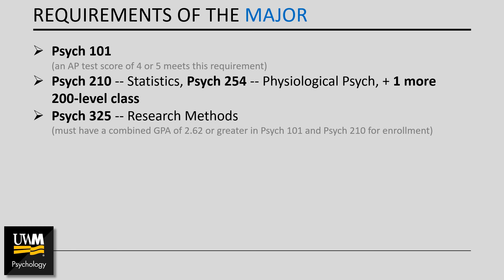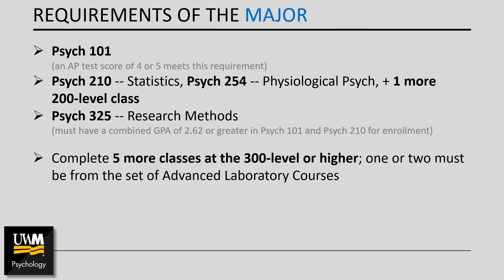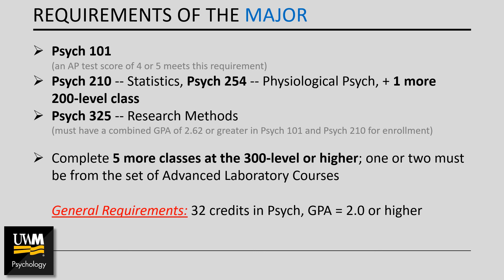To make good progress in the major, you probably want to complete statistics by the end of your sophomore year so that you can enroll in research methods as a junior. Finally, you must complete five additional classes at the 300 level or higher. One or two of these must be from the set of advanced laboratory courses. Ultimately, to meet requirements of the major, you must complete 32 credits in psychology with a combined GPA of 2.0 or higher.